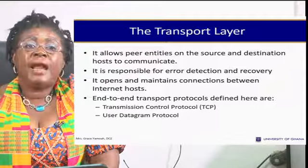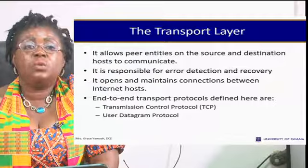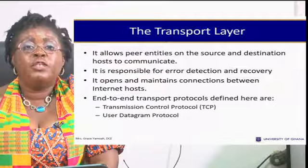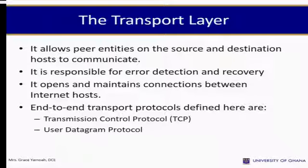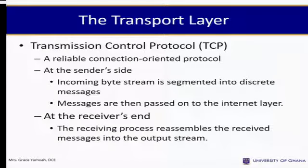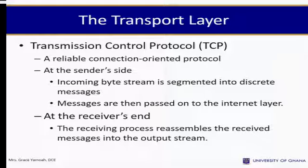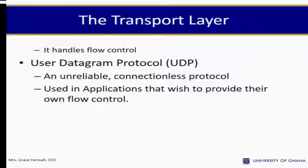The transport layer allows peer entities on the source and destination hosts to communicate. It is responsible for error detection and recovery and opens and maintains connections between internet hosts. End-to-end transport protocols defined here are TCP and UDP. TCP is a reliable connection-oriented protocol: at the sending side, the incoming byte stream is segmented into discrete messages, passed to the internet layer; at the receiver's end, messages are reassembled into the output stream. It handles flow control. UDP is an unreliable connectionless protocol used by applications that wish to provide their own flow control.